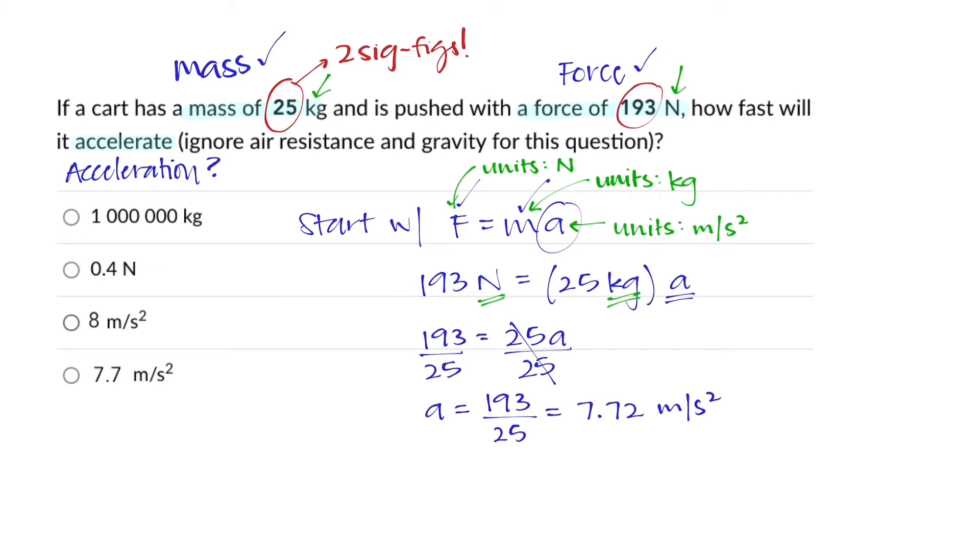In the case of the force, we have three significant figures. In order for us to decide, do we round our answer to two or three significant figures, we always go with the lower number of significant figures that are given in the problem. So that would be two in this case. When we round our answer, we have to cut it off after the first two digits. In this case, that would be 7.7 meters per second squared.